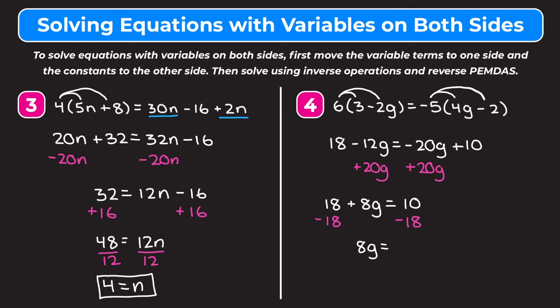On the right side, 10 minus 18 is negative 8. Now my final step is to get rid of this 8 which is being multiplied by G, so I divide both sides by 8. On the left, 8 divided by 8 is 1, so I'm left with 1G, which is the same as G. On the right, negative 8 divided by 8 is negative 1. So G equals negative 1.